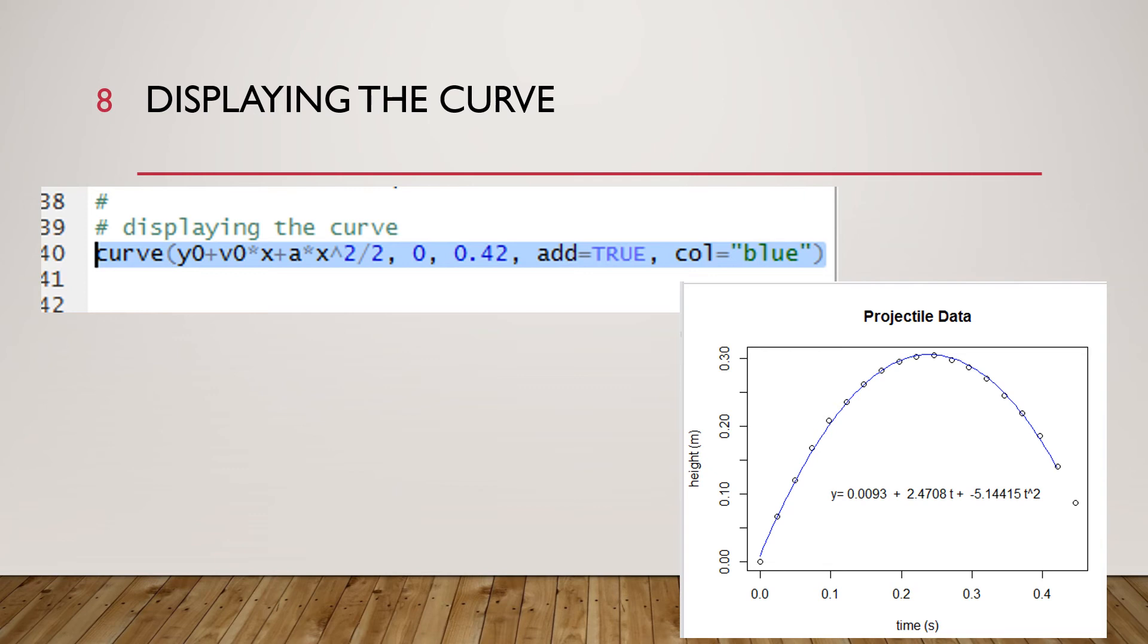The next parameter is our from, we're going to go from x which is really a time but x at zero and go up to an x of 0.42. Our fourth argument is add equals true, we're going to add it to the plot we already have, and our fifth argument is col equals blue, we're going to have a blue color for the curve.